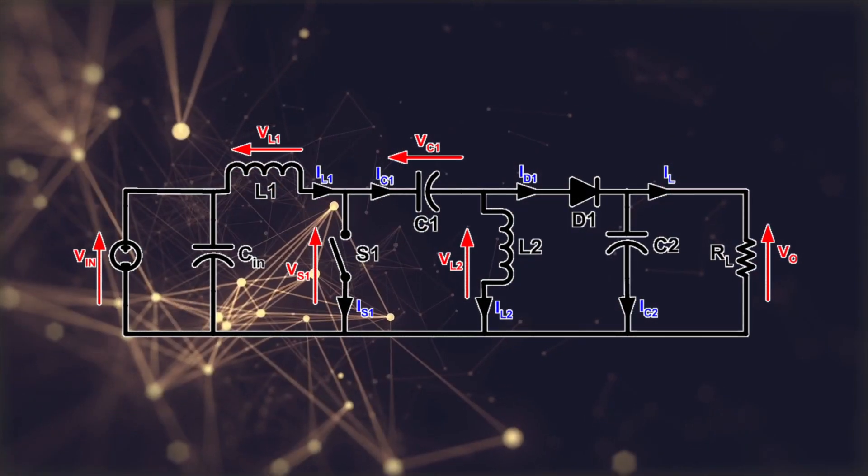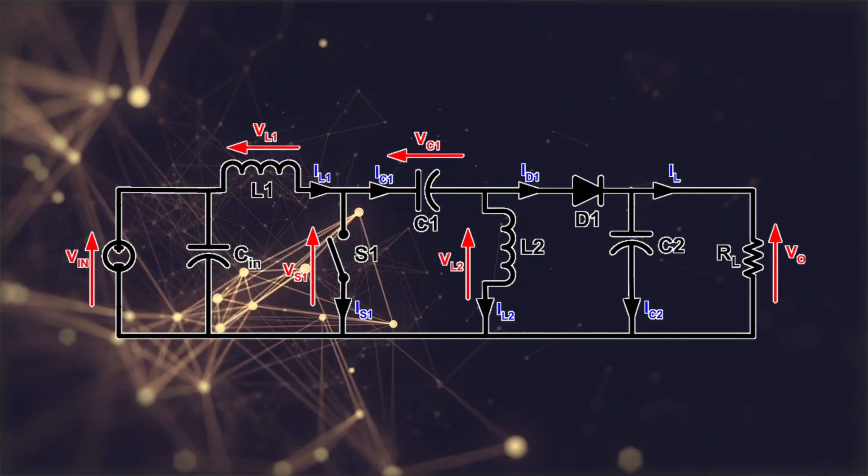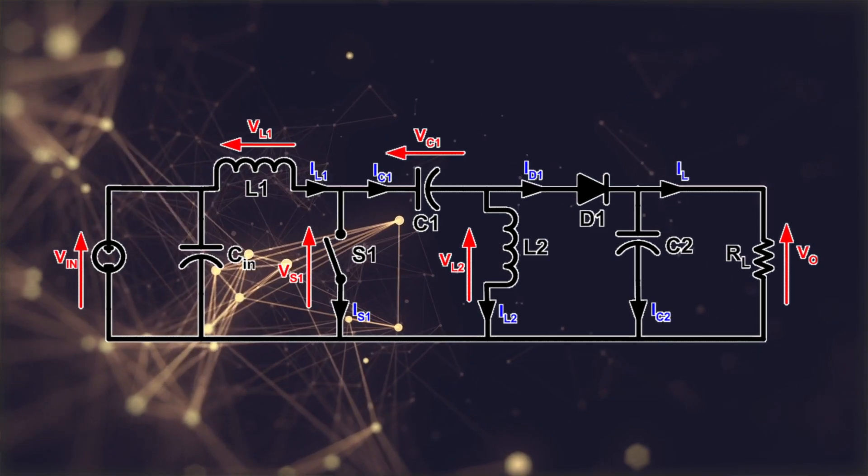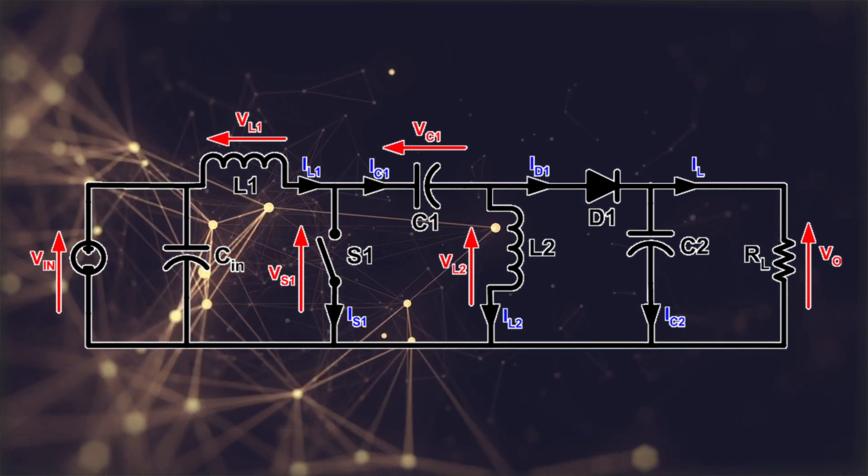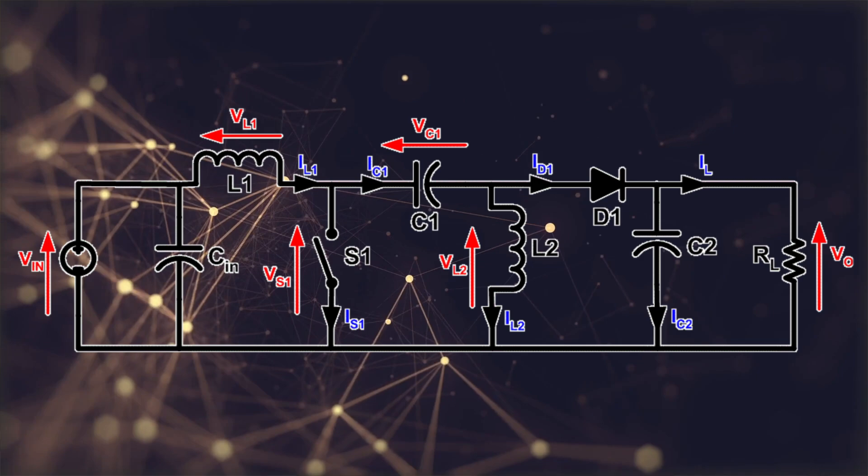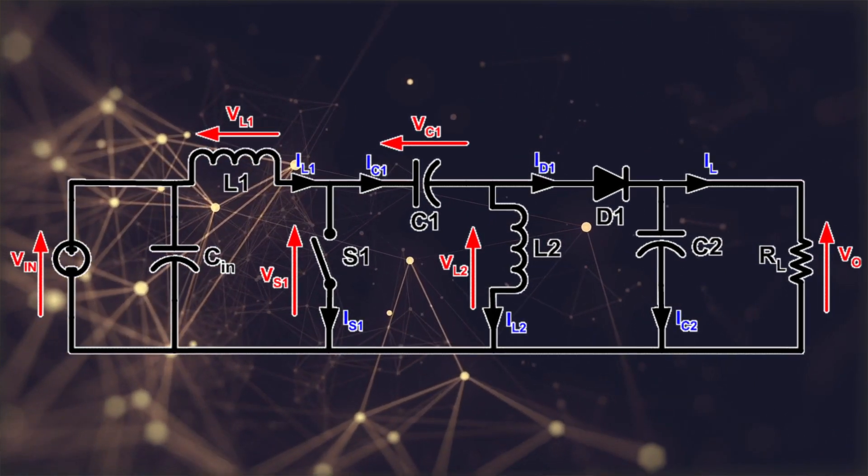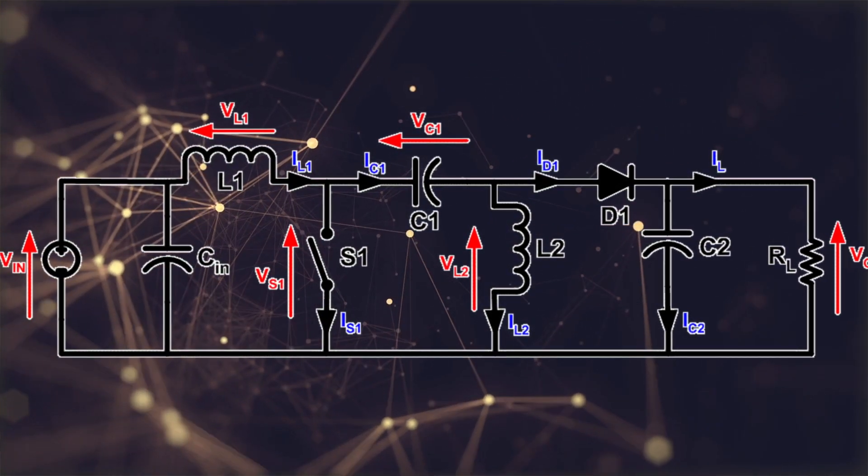The SEPIC is super interesting because it can produce a voltage above, below, or equal to the input voltage with a single MOSFET, and specifically, that MOSFET has low side drive rather than high side drive. So that means that we only need a voltage of something like 5 to 15 volts with reference to ground rather than needing 5 to 15 volts above the input voltage. That is pretty cool, and it leads to a very simple gate drive architecture and a relatively low cost power supply. Comparing to the buck boost, there's four switches, two of which need high side drive. This is a big improvement.